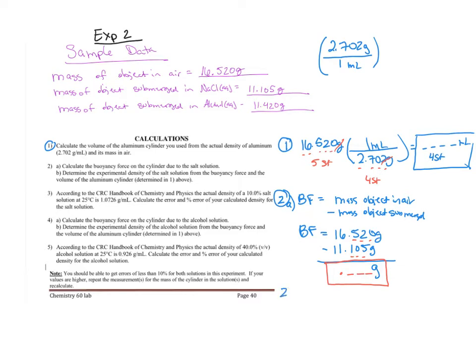For 2b, determine the experimental density of the salt solution from the buoyancy force and the volume. So I take my buoyancy force - let me subtract these: 16.520 minus 11.105, which gave me 5.415 grams.